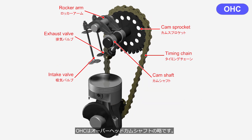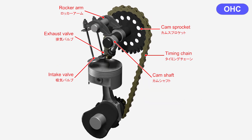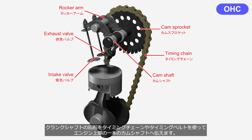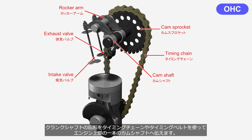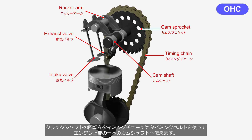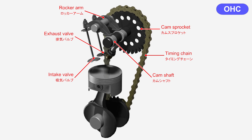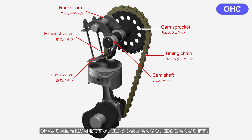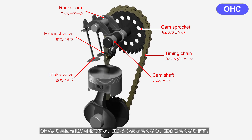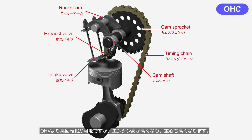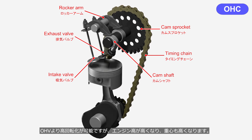OHC stands for overhead camshaft. The rotation of the crankshaft is transmitted to a single camshaft at the top of the engine using a timing chain or timing belt. It allows for higher engine speed compared to OHV, but it is taller and has a higher center of gravity than OHV.